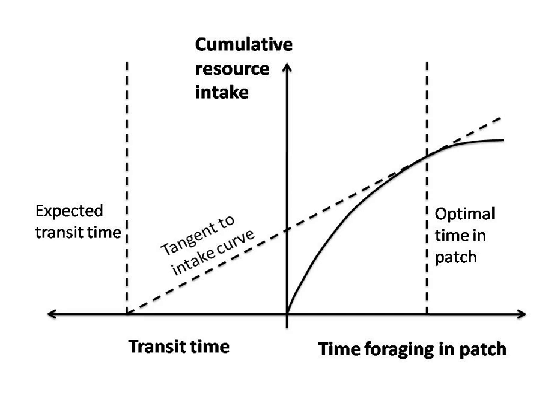As animals forage in patchy systems, they balance resource intake, traveling time, and foraging time. Resource intake within a patch diminishes with time, as shown by the solid curve in the graph to the right. The curve follows this pattern because resource intake is initially very fast, but slows as the resource is depleted. Traveling time is shown by the distance from the leftmost vertical dotted line to the y-axis. Optimal foraging time is modeled by connecting this point on the x-axis tangentially to the resource intake curve, maximizing the ratio between resource intake and time spent foraging and traveling.